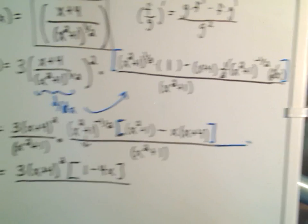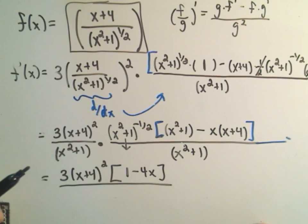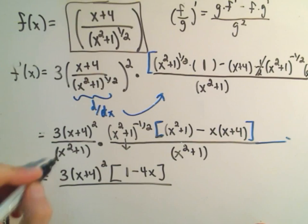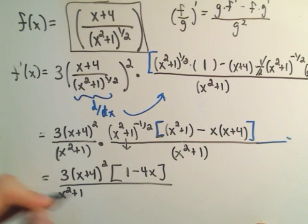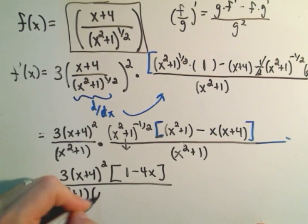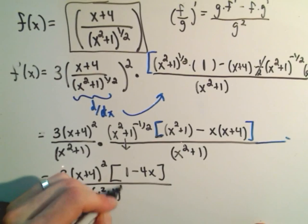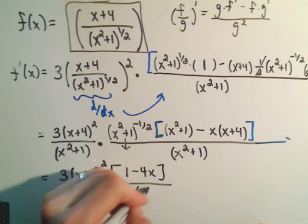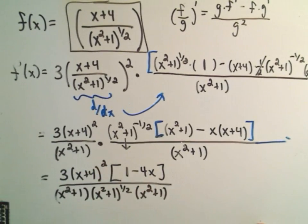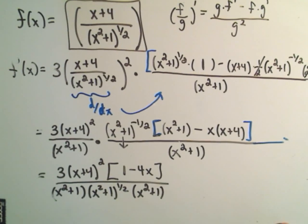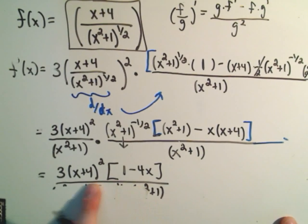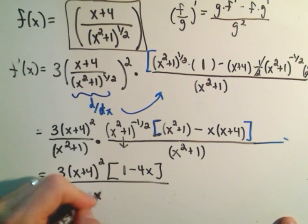If I bring the x to the negative one half down to the denominator I'm going to get my original x squared plus one. Now I'm going to have an extra x squared plus one to the one-half. And now I'm going to have the original x squared plus one that was over here. So if you add the exponents, this is two over two, two over two and a half, we'll get x squared plus one to the five halves.